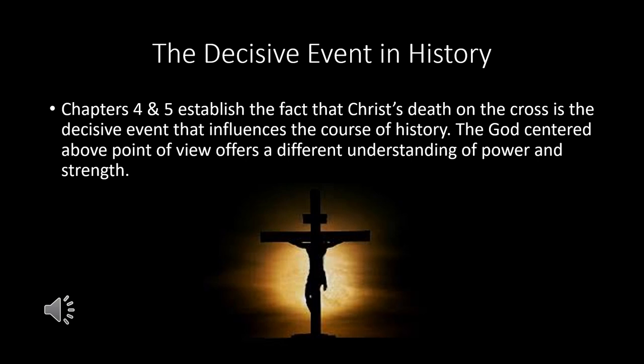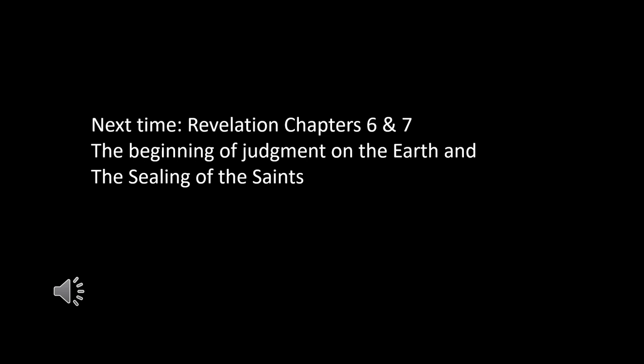Chapters 4 and 5 establish the fact that Christ's death on the cross is the decisive event that influences the course of history. The God-centered above point of view offers a different understanding of power and strength. This is really one of my favorite lessons — the heavenly worship service of Revelation 4 and 5 is a beautiful vision of what's happening in heaven. Join us next time for Lesson 4, where we get into the judgments of the earth beginning in chapter 6, the opening of the seals, and chapter 7, which shows the sealing of the saints. Until then, I'm Steve Meeker — thank you for joining us.